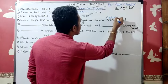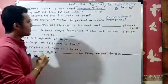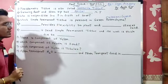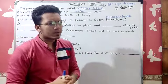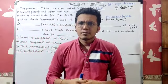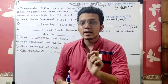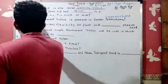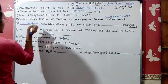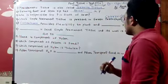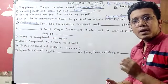So the answer is chlorenchyma. Dash provides flexibility to plants and dash stores food. Flexibility — which simple permanent tissue? Collenchyma provides flexibility. And for food storage, parenchyma comes in. So the answer will be collenchyma for flexibility and parenchyma for food storage.